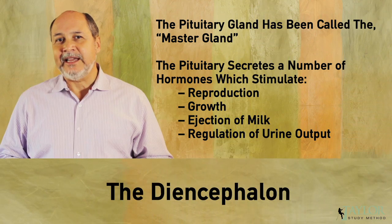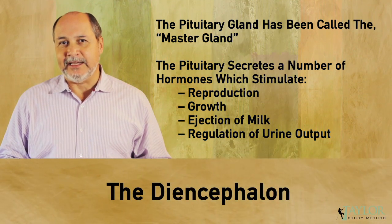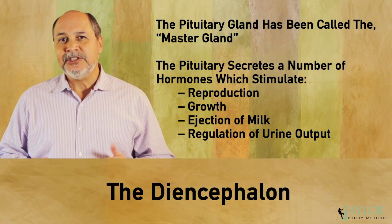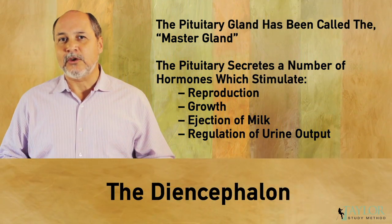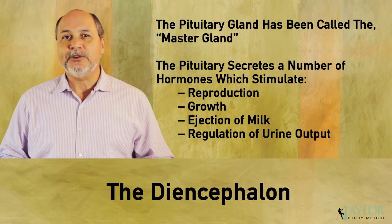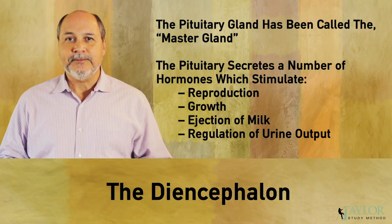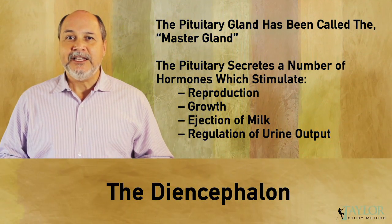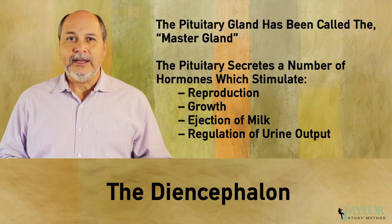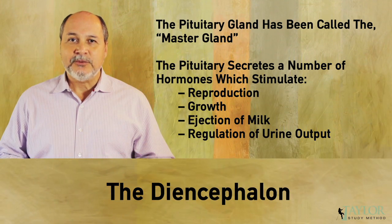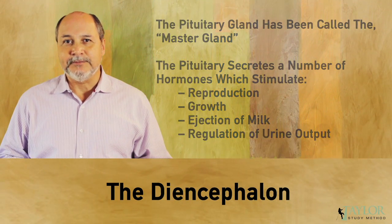The pituitary gland has been called the master gland. The pituitary secretes a number of hormones which stimulate reproduction, growth, ejection of milk, and regulation of urine output, among others.